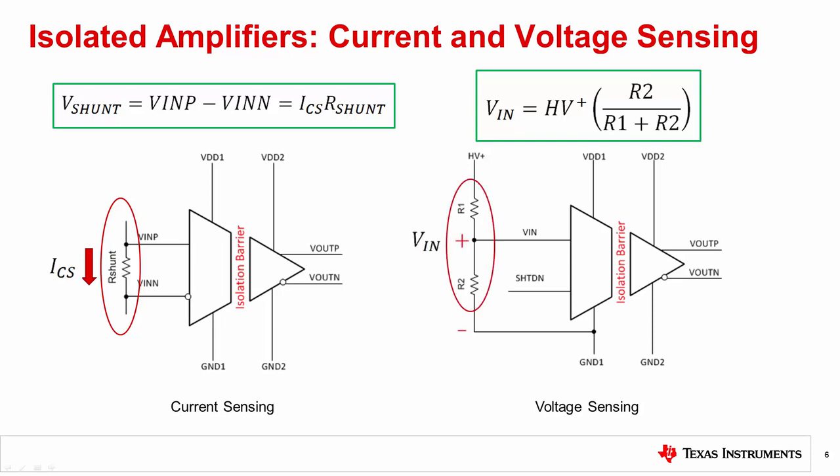TI offers a variety of isolated amplifiers for shunt-based current sensing with input ranges of either plus-minus 50 millivolts or plus-minus 250 millivolts. The input voltage range of the isolated amplifier determines the value of the shunt resistor based on the current to be measured. For voltage sensing applications that use voltage division, TI offers isolated amplifiers with input ranges up to plus-minus 12 volts. For additional information on isolated amplifiers, please visit TI.com/isolation and click on the isolated amplifiers link.